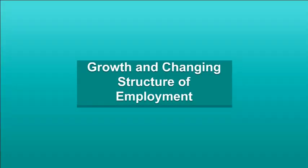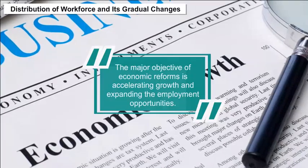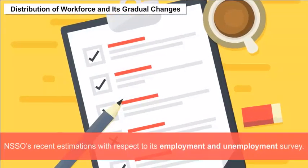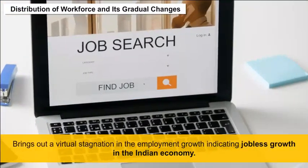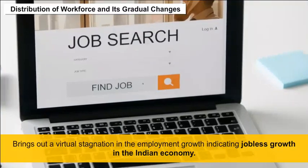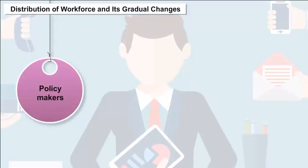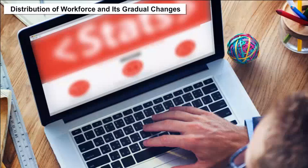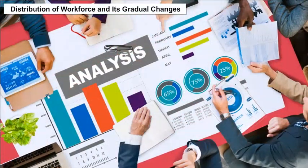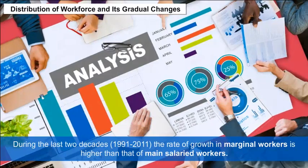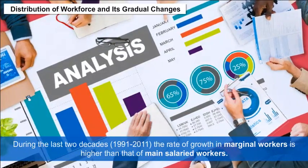Growth and Changing Structure of Employment: A major objective of economic reform is accelerating growth and expanding employment opportunities. However, NSSO's recent Employment and Unemployment Survey indicates virtual stagnation in employment growth, pointing to jobless growth in the Indian economy, raising concern among policymakers, academicians, and development activists. Census data classifies workers into main and marginal workers, and analysis shows that during 1991 to 2011, the rate of growth in marginal workers was higher than that of main salaried workers.